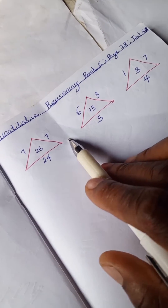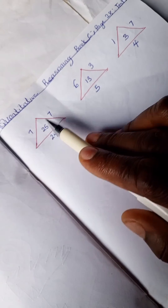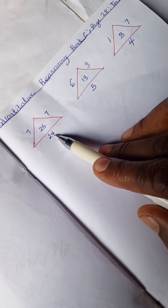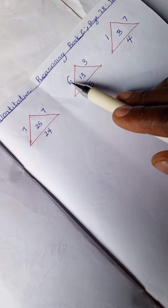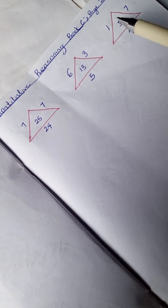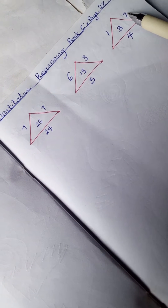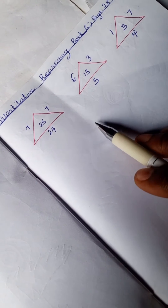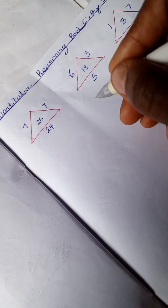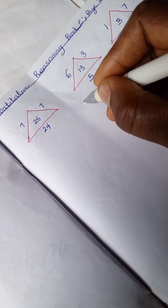We have this problem and we're going to dissect it. Here we have 7, 7, 25, 24; here 6, 3, 13, 5; and here 1, 7, 3, 4. Let's work with the second problem.